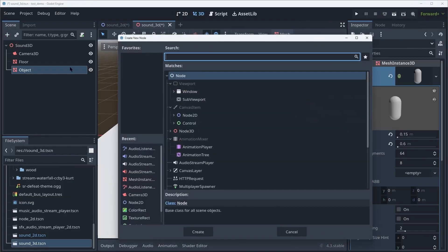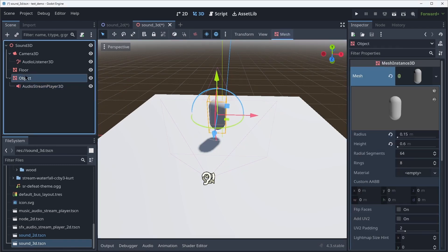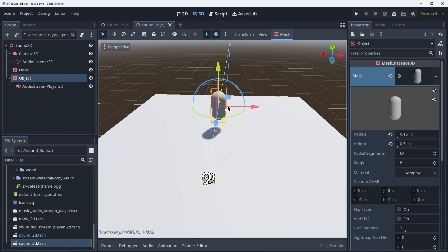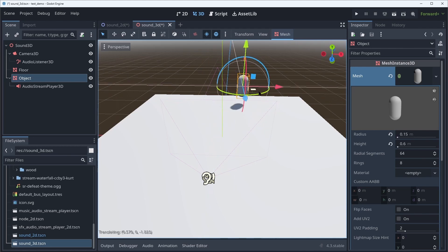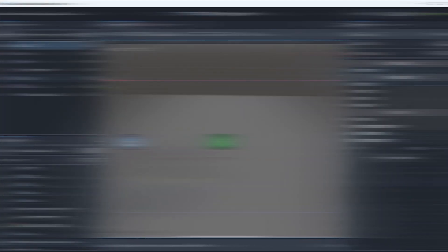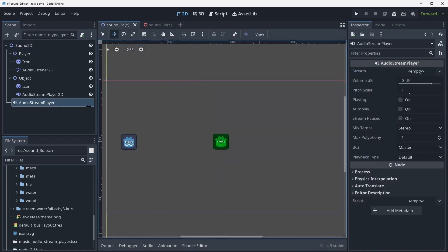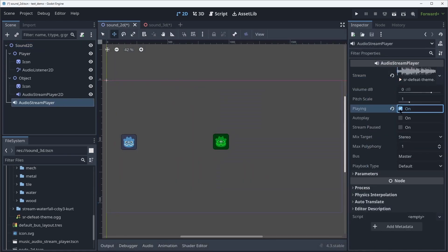There's the Audio Stream Player 3D, which is basically the same thing as the 2D one, but for 3D. And then there's the Audio Stream Player by itself, which will just play a sound equally in both ears. This is great for music and UI sound effects usually, maybe dialogues in an RPG or something, where you just want the sound to be equal everywhere.